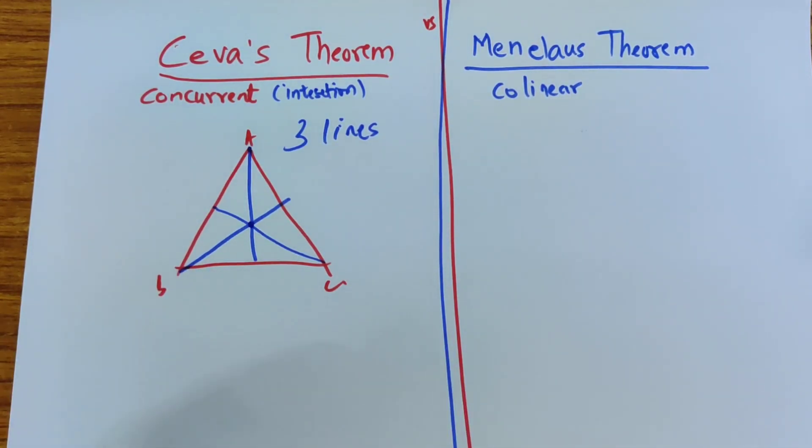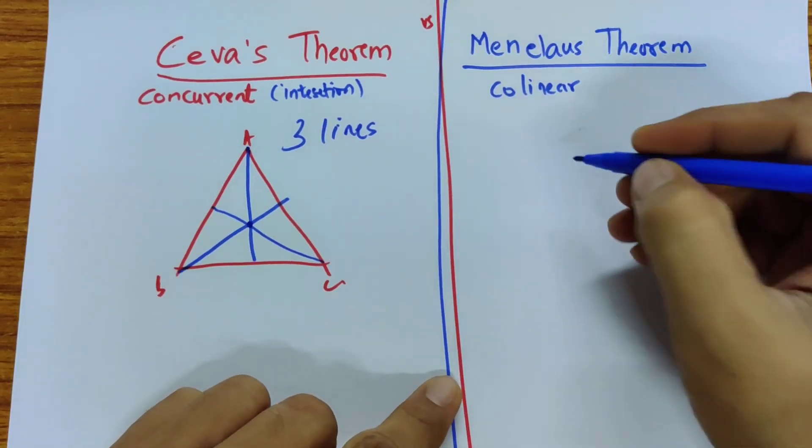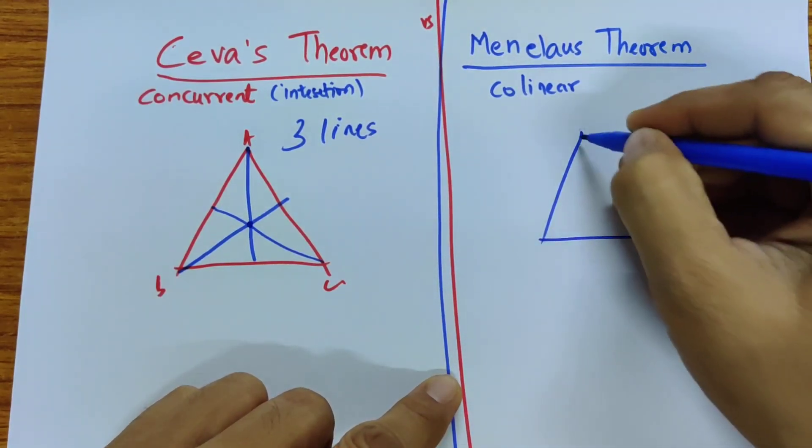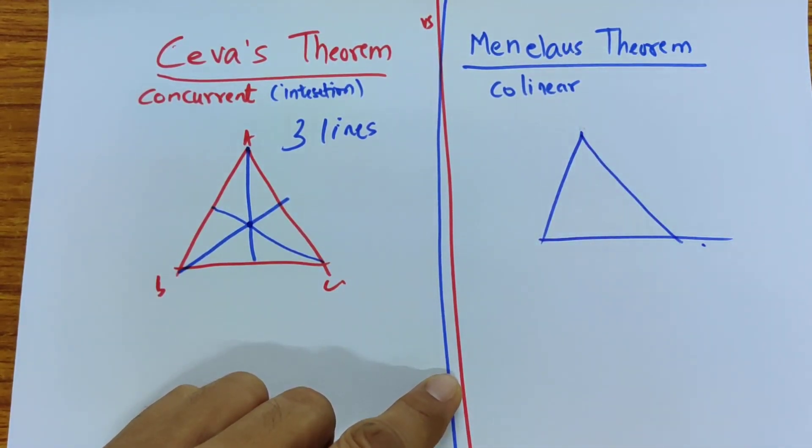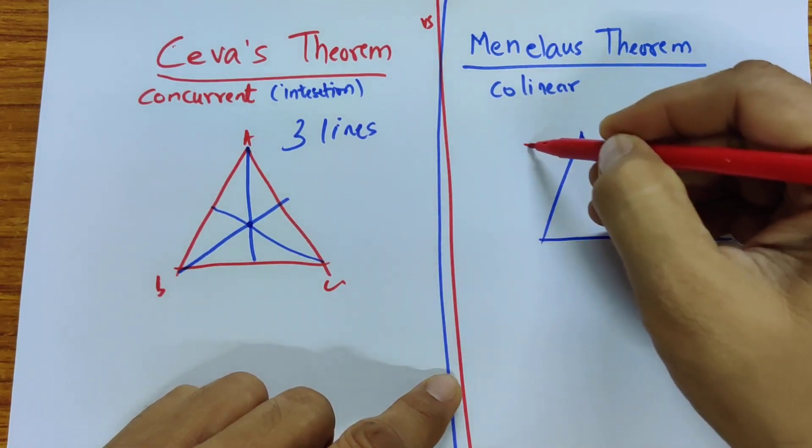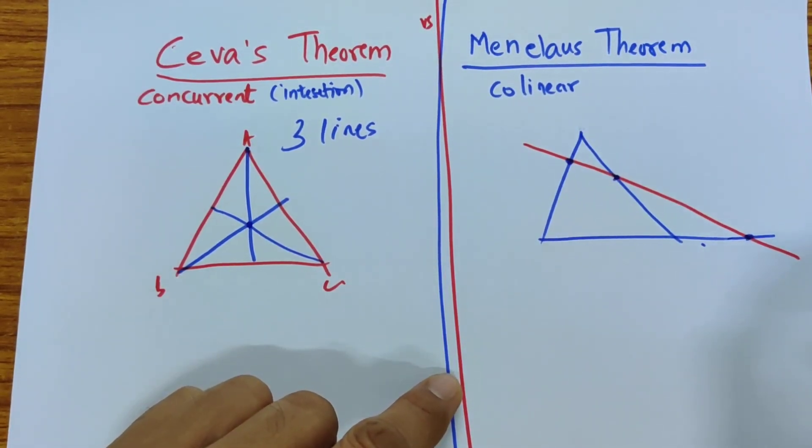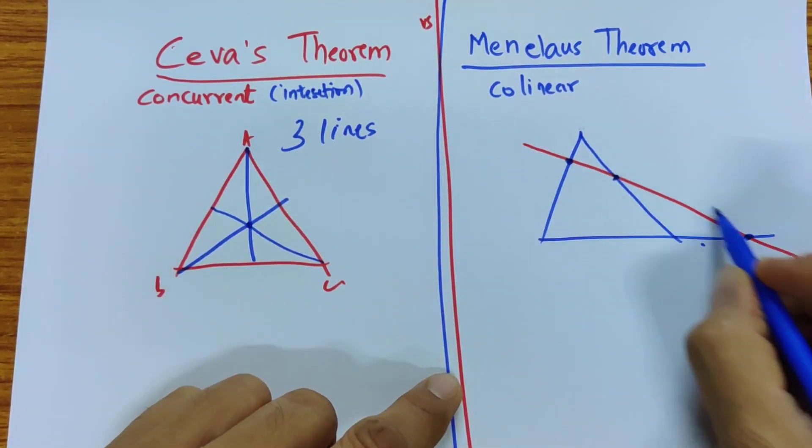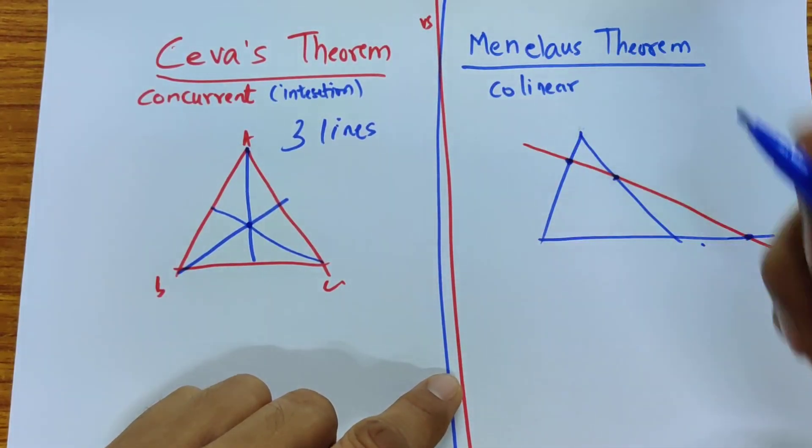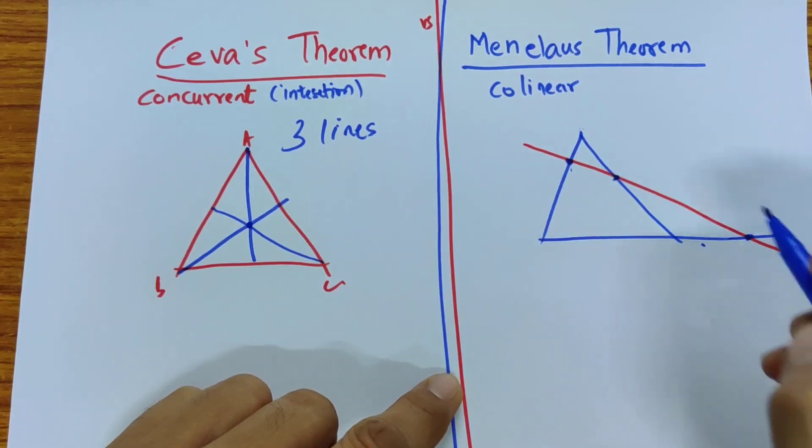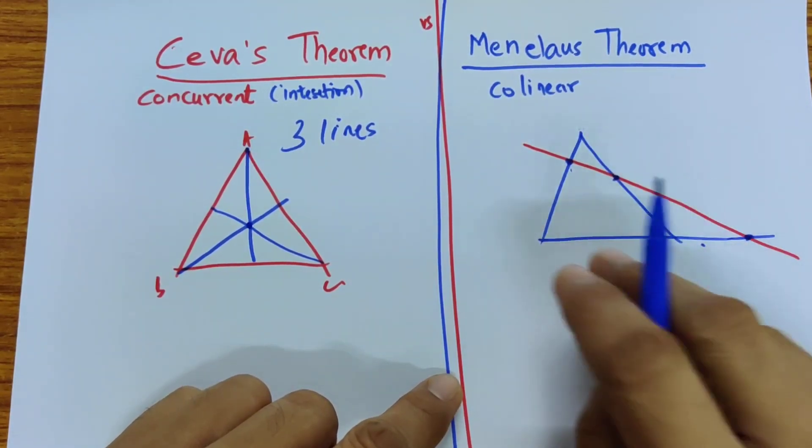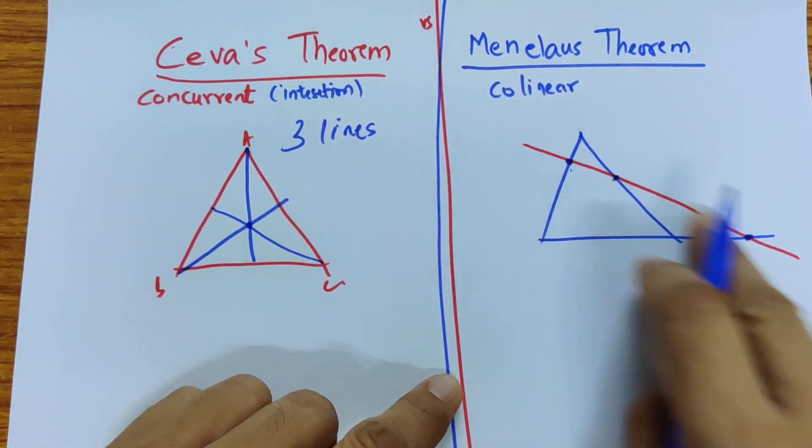Menelaus theorem is about a triangle and about a line, one line. One line. When is this one line going to intersect? And when this one line is there, then what are these three points and what do they do to the ratios? So this is about the three points,